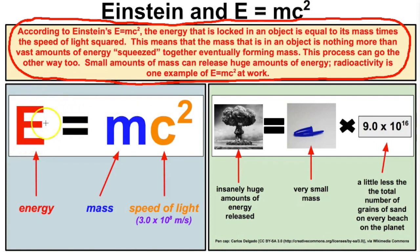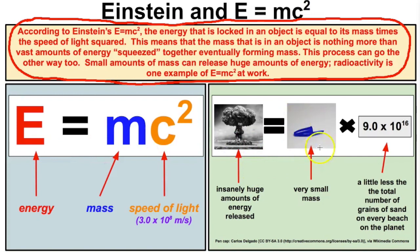Einstein's special relativity basically means that energy and mass are one and the same thing — in chemistry and physics, they're identical. Mass is nothing more than huge amounts of energy squeezed together. If we work this process backwards, we can take the mass of a pen cap, for example, and if we can somehow figure out a way to do so, we can unlock insanely huge amounts of energy from its atoms.